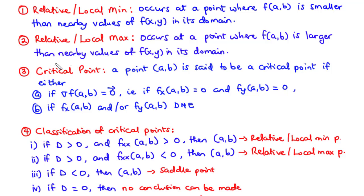If a point AB is either a relative minimum or a relative maximum, then that point is also a critical point. A point AB is said to be a critical point if either of two conditions is true: the gradient of the function at point AB is equal to the zero vector, meaning the first-order partial derivative with respect to x at AB equals zero, and the first-order partial derivative with respect to y at AB also equals zero.